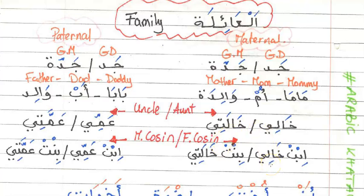Quite a handful to remember, but it's actually fun when you write it down and try to memorize it. You have two maternal — maternal aunt and uncle — and then two paternal aunt and uncle.